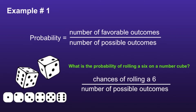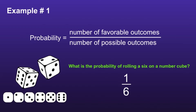Example number 1: What is the probability of rolling a 6 on a number cube? In the numerator we have the number of favorable outcomes — in this example, that would be the number of chances of rolling a 6. If we look at the number cubes at the bottom left, we can recognize that there is only one chance of rolling a 6, so the numerator in our fraction would be 1. The denominator is the number of possible outcomes. If I was to roll a number cube, there would be 6 possible outcomes — I could either roll a 1, 2, 3, 4, 5, or 6. So the denominator would be 6, and the probability of rolling a 6 on a number cube would be 1 sixth.